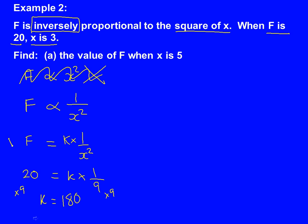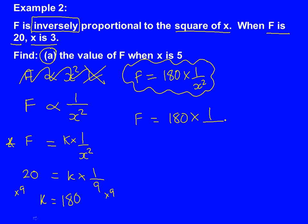So my formula here, I can now rewrite with my K value as 180. So F equals 180 times 1 over x squared. That is my main formula for this question. I'm now going to use it to put x is 5 to answer part A.